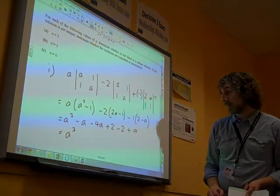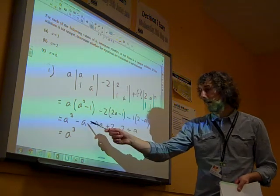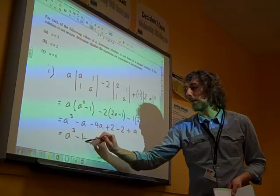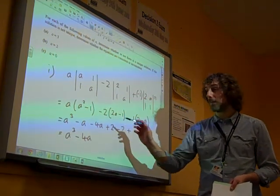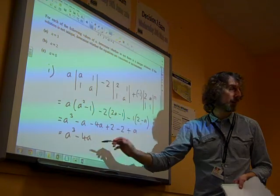We've got A cubed. Now, what else has gone on here? We've got minus A minus 4A plus A. So minus 4A, and that's your lot. Plus two minus two. That's it. That's all we get.